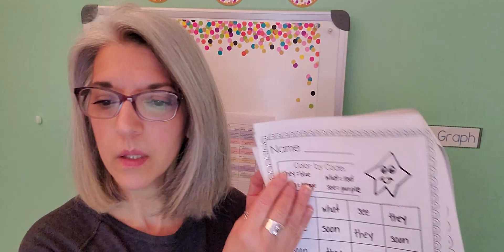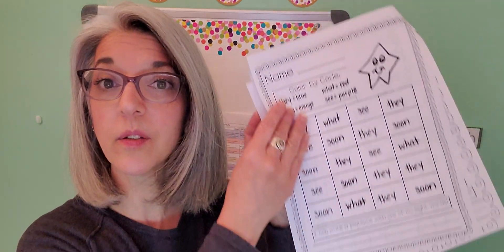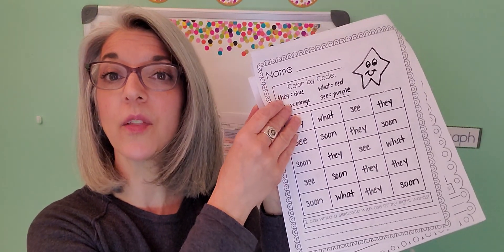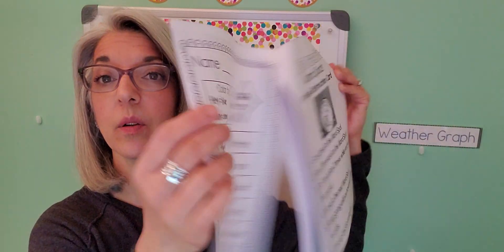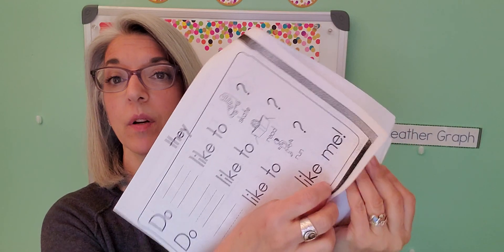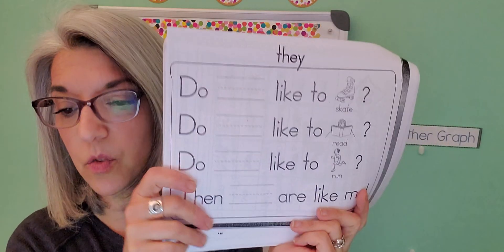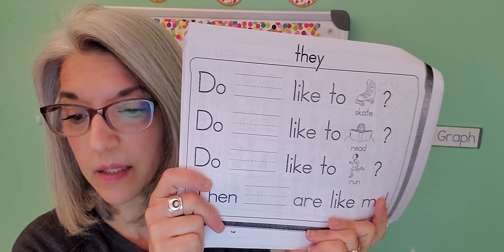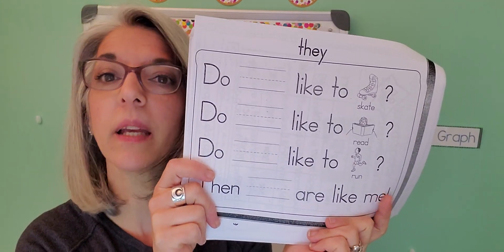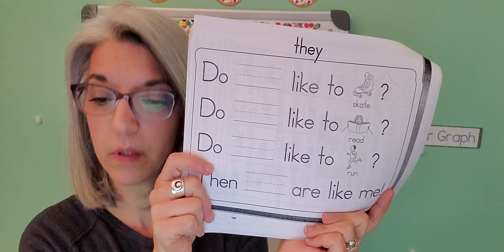Going across the bottom choices, the first one is on the other side of this sheet. So if you just flip it over, it's 'they and do they like' — 'do they like to.'